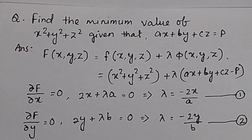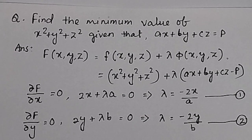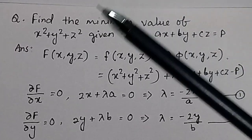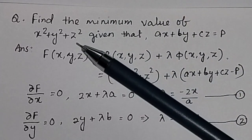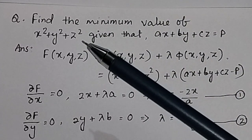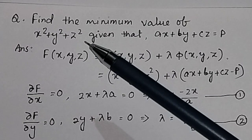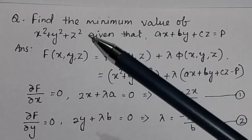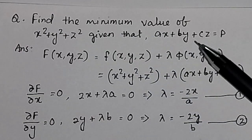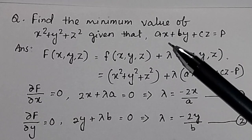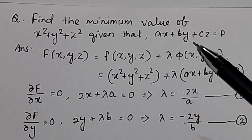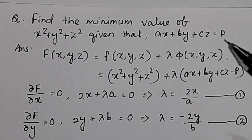Find the minimum value of x² + y² + z², given that ax + by + cz = p. Here we have to find out the value of this objective function, which is x² + y² + z², and the constraint condition given is ax + by + cz = p.